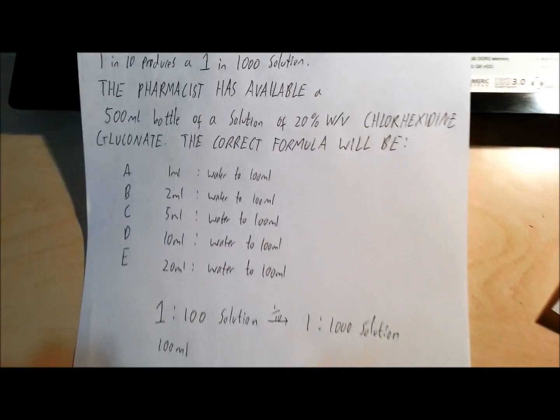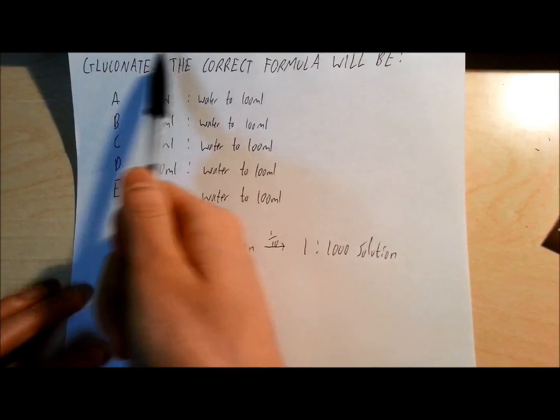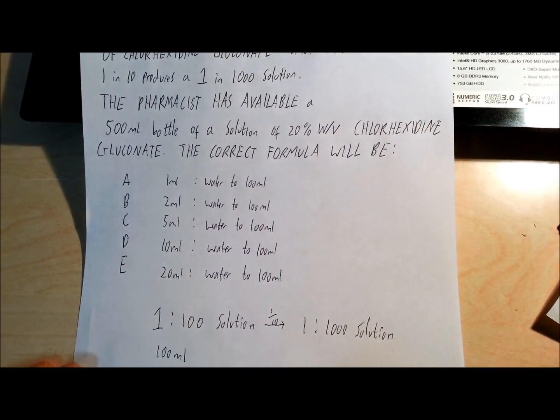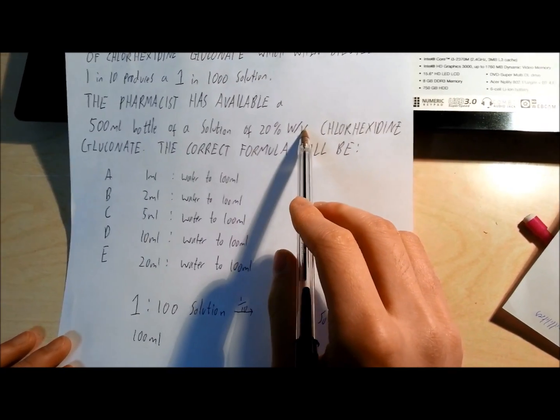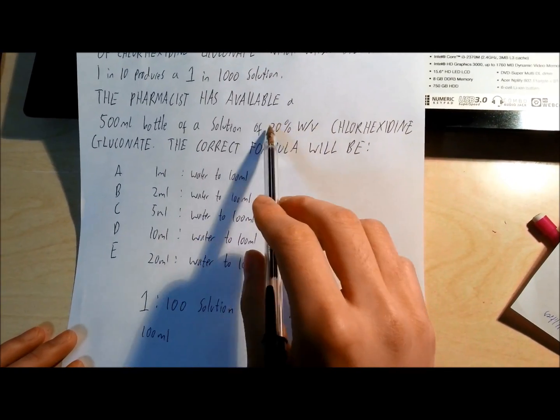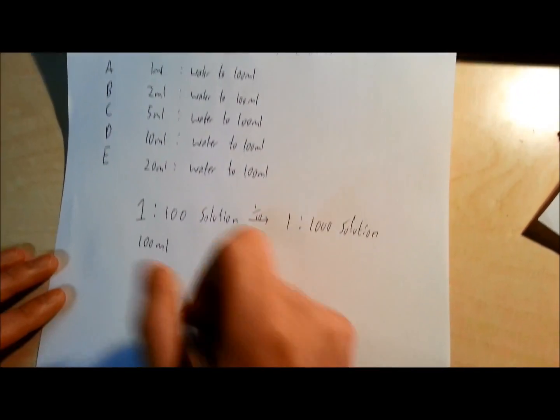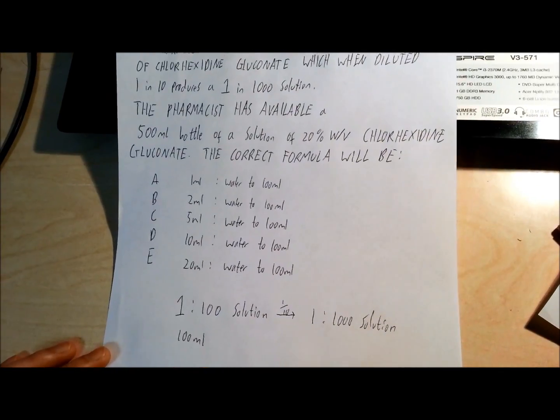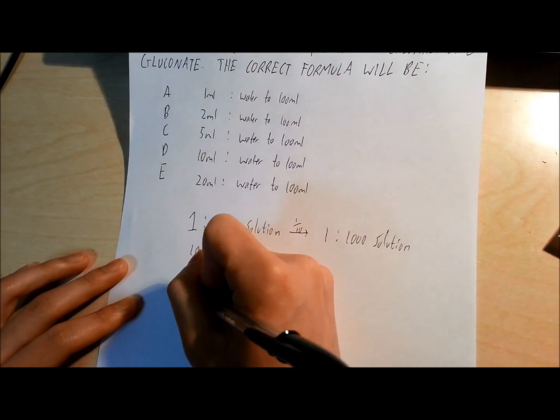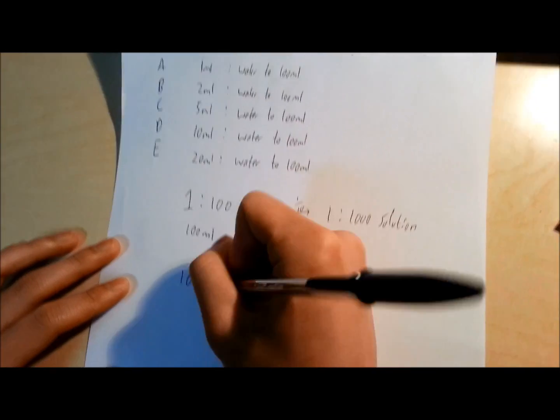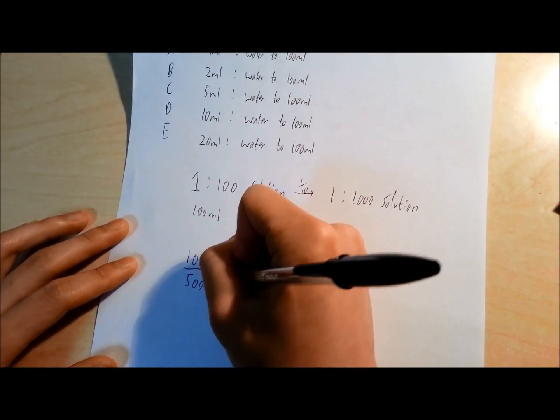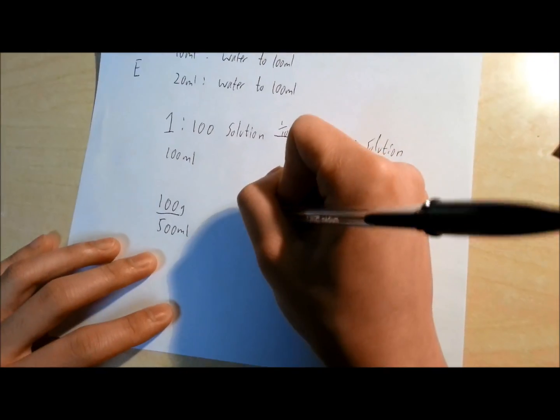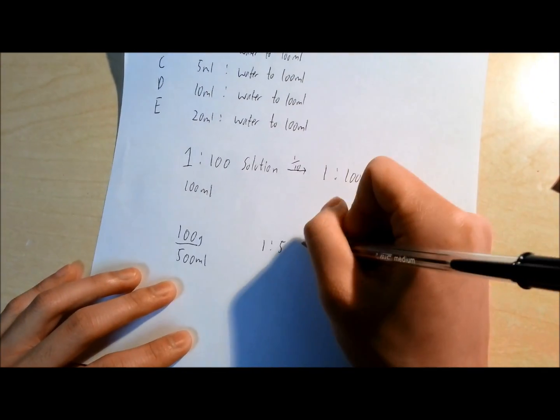Now what we have here is 500 milliliters of a solution of 20% W over V. That means that for every 100 milliliters, there is 20 grams in that. We have 500 milliliters, that means we have 100 grams in 500 milliliters. So we have a 1 in 5 solution.